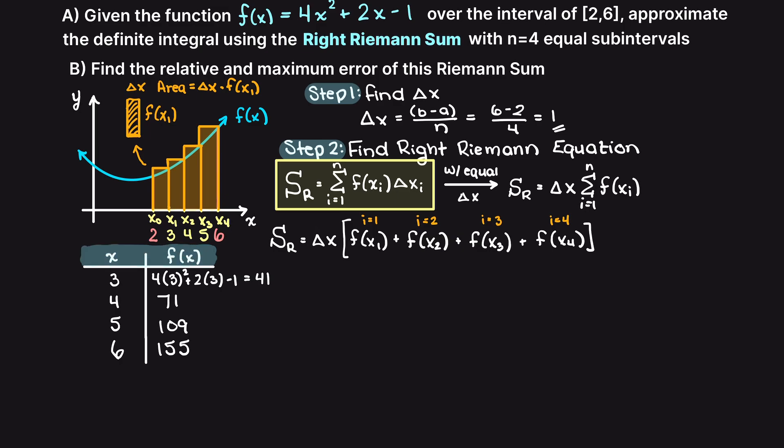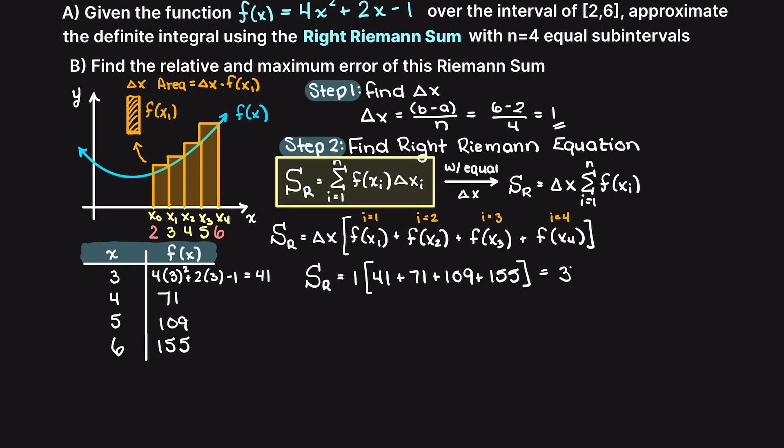Lastly, we have all the required variables now, and we can now solve for the areas by plugging in our recently found values. Therefore, this definite integral is approximately equal to 376, and this is our final answer.